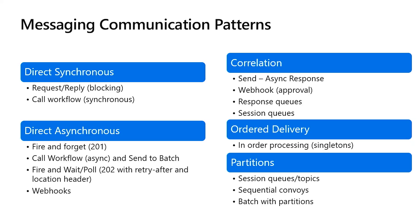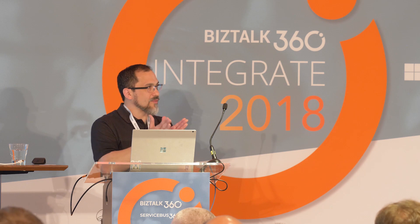On the async messaging side, you have message correlation. If you want to send a message and then wait for an asynchronous response, there are a couple of ways to do that. You can use correlated messages — on the request message you get a reply queue to listen to — or you can use session queues for correlation.